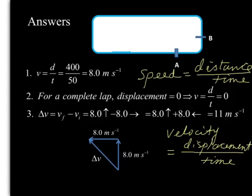For the answers, let's look at question one. Speed is distance divided by time. Both speed and distance are scalars. They go together. So that divided by that can be 8 meters per second. That is speed.